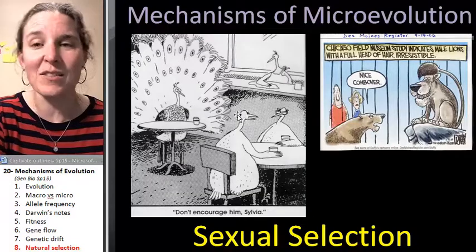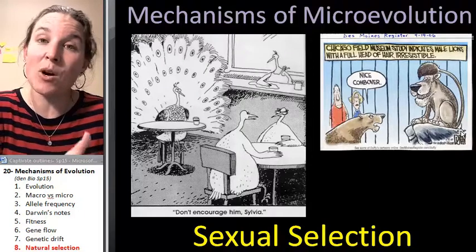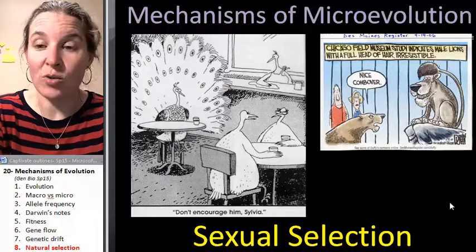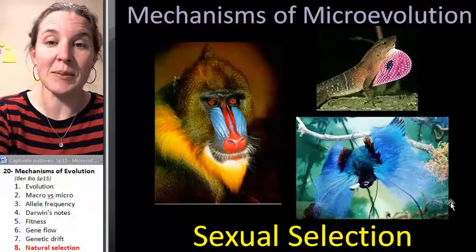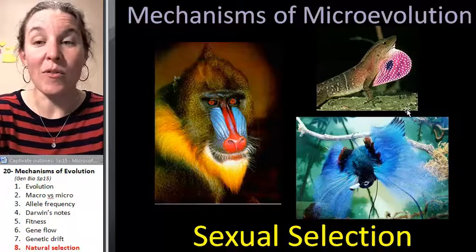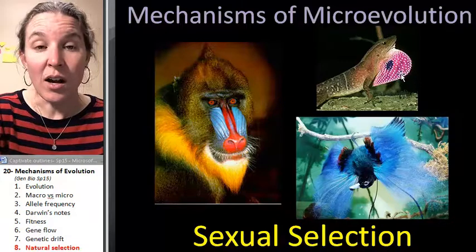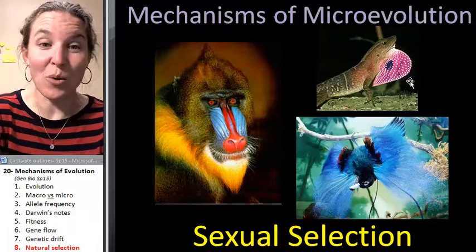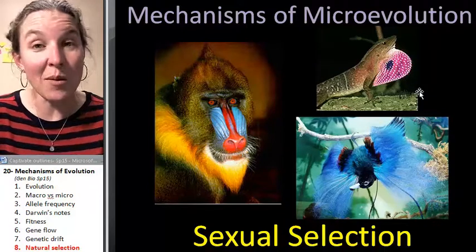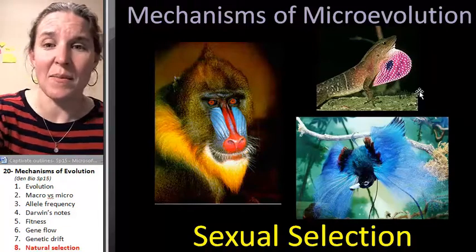We talked about the peacock already as an example of sexual selection. Any sexual dimorphism — any time the male critter looks different from the female critter — you probably have an example of sexual selection going on, because one critter is trying to be more attractive to the opposite sex. These are characteristics that provide reproductive advantage. Part of the whole picture is making more babies, so if a characteristic lets you make more babies, it's kind of worth it because you get to pass on your genes.